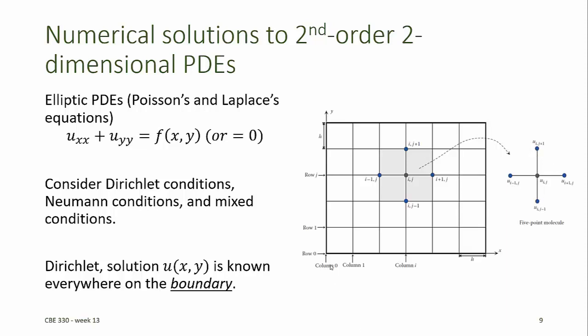In the notation used in our textbook, the point on the boundary in the lower left corner corresponds to the zeroth row and the zeroth column. The x-coordinate increases across the columns, and the y-coordinate increases as you go up the rows. We'll assume that the spacing of the mesh in both the x and y-directions is the same — h is the distance between mesh points, and all points are evenly spaced in the domain.